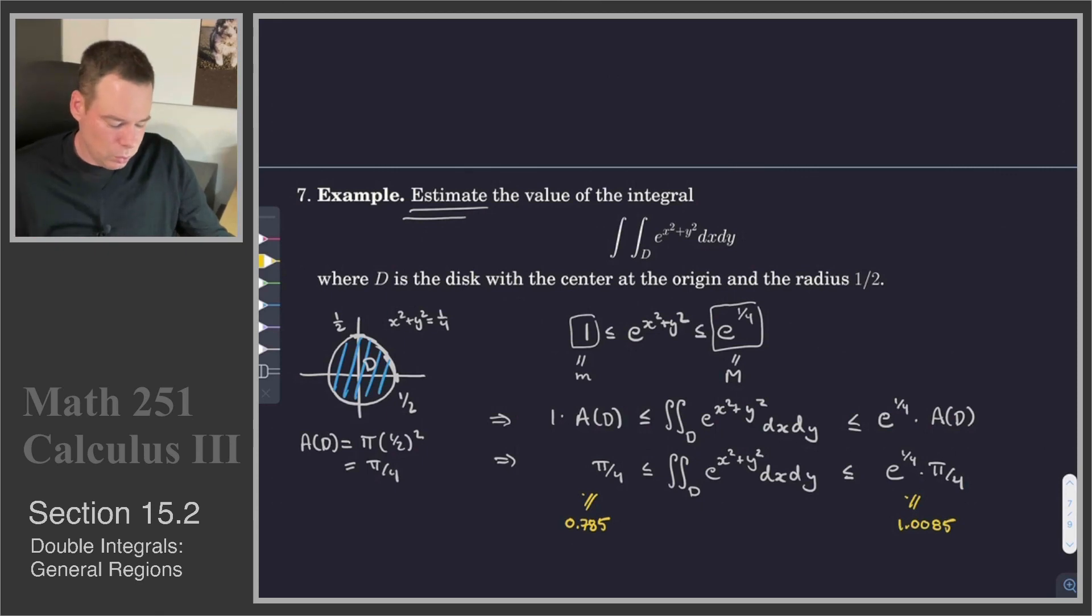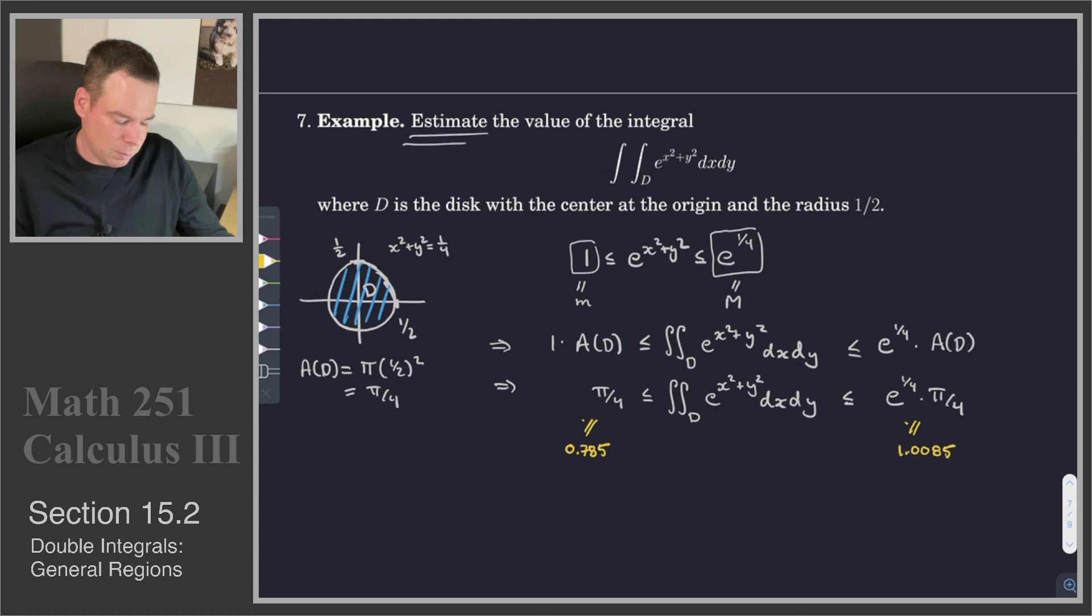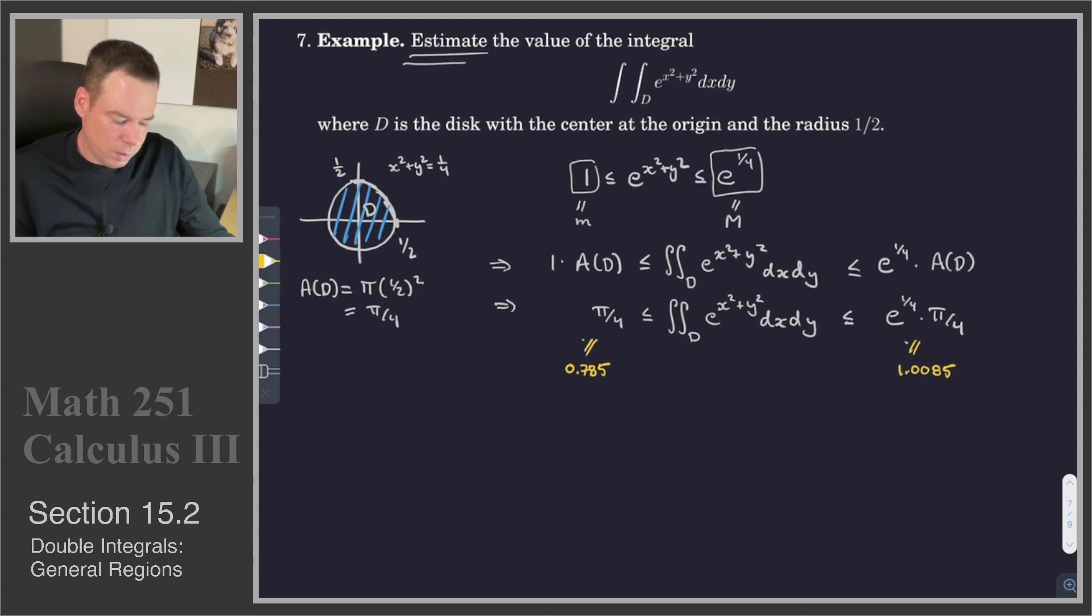So this is how we can use these properties of the integral to do things like estimate the value of an integral. If we can't work out the antiderivative, then let's just figure out what is the biggest the function value can get on that domain, what is the smallest value, and so then it's trapped between the areas times the upper and lower values. All right, that's it for this section. Thanks for watching, and we'll see you again next time.